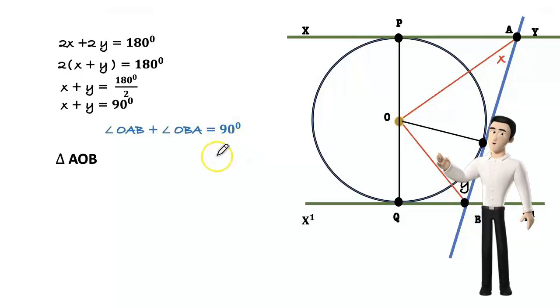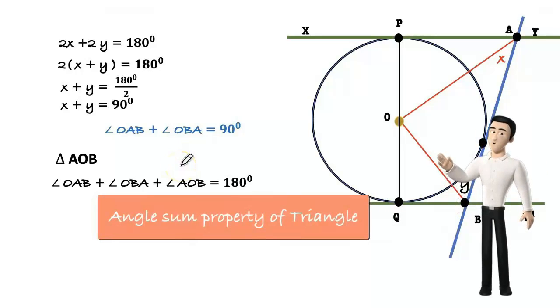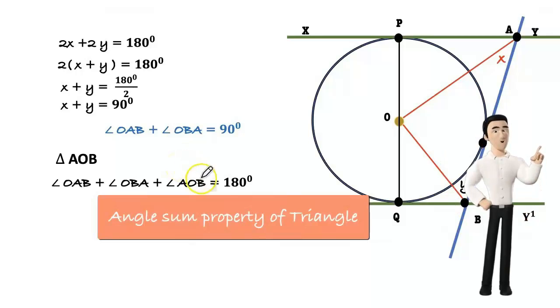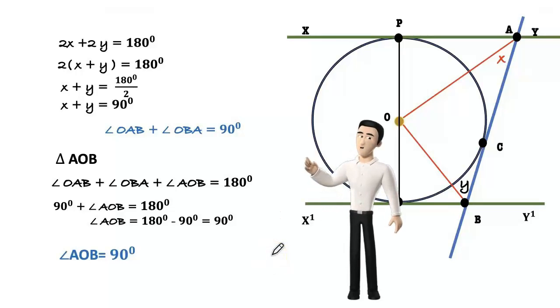In triangle AOB, angle OAB plus angle OBA plus angle AOB equals 180 degrees. 90 plus angle AOB equals 180, then angle AOB equals 180 minus 90 equals 90 degrees. So angle AOB equals 90 degrees.